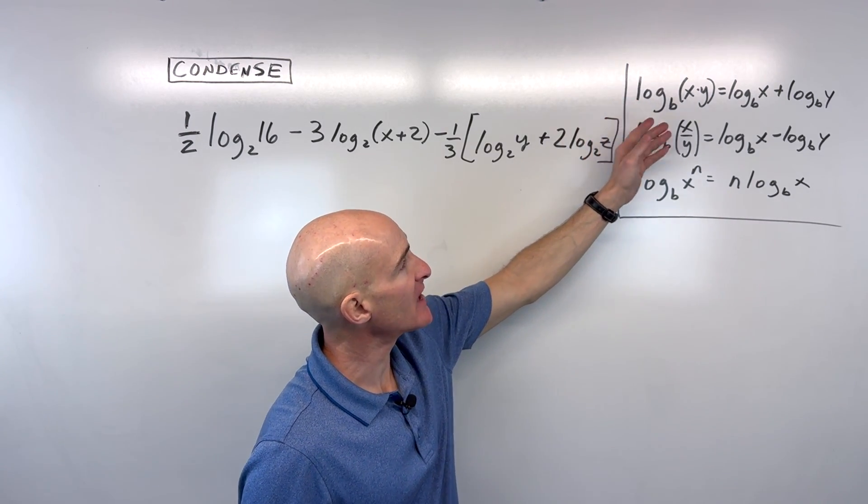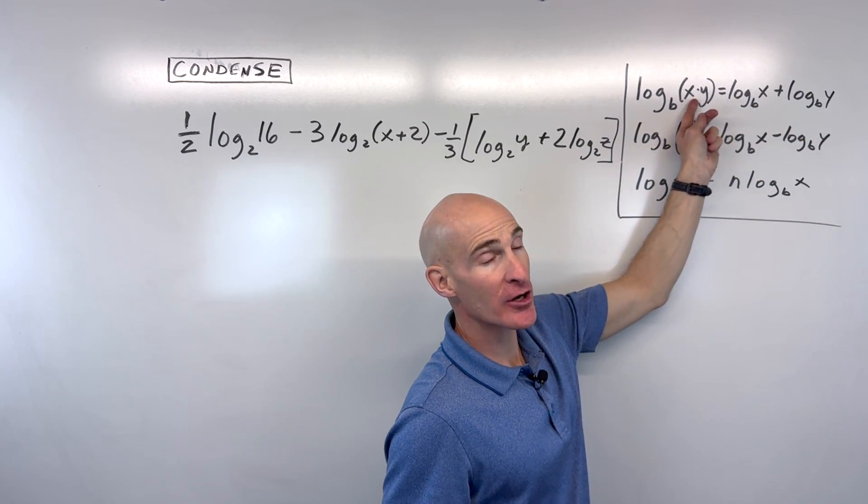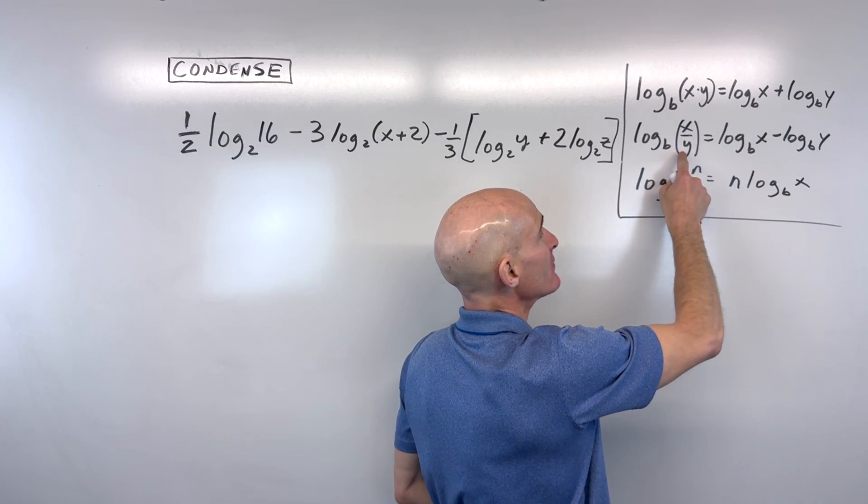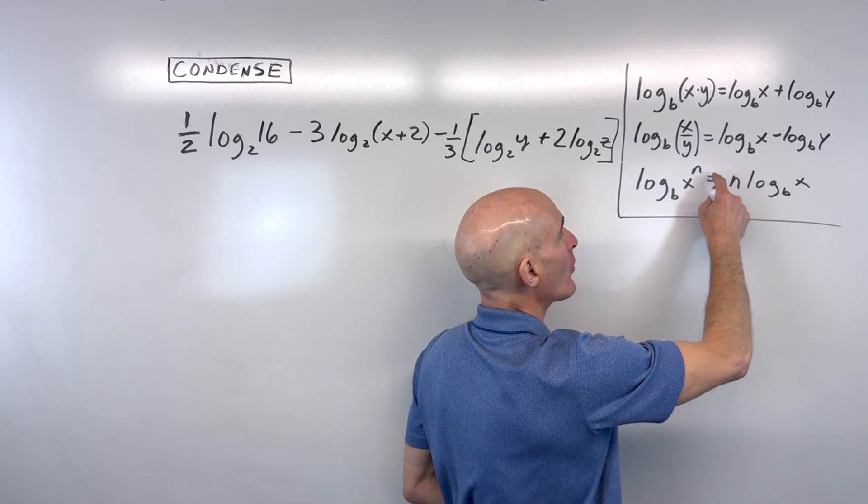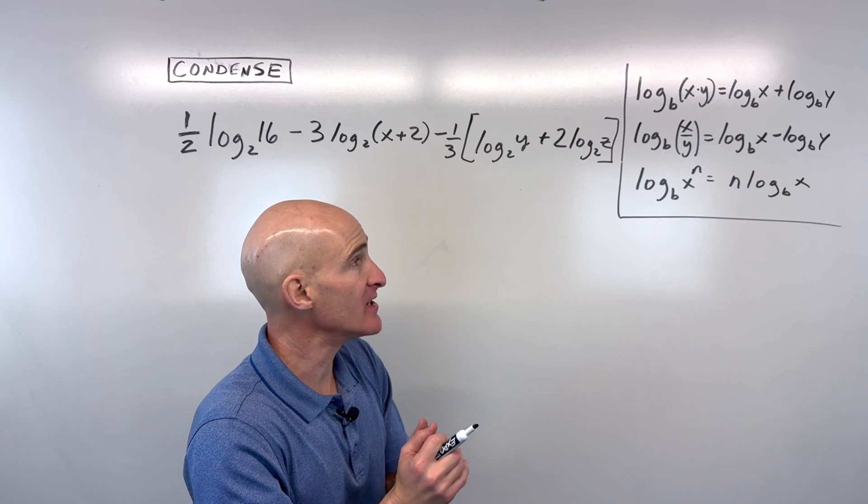Remember the rules for condensing. If you're adding and you have the same bases, you can multiply the arguments and condense it into one log. If you are subtracting, you can divide. And if you have this coefficient, you can bring it up as a power. That's the power property of logs. So working from the right to the left side here is condensing.